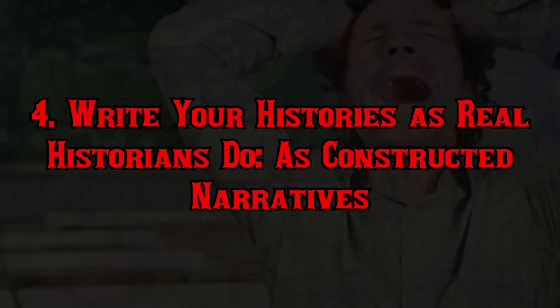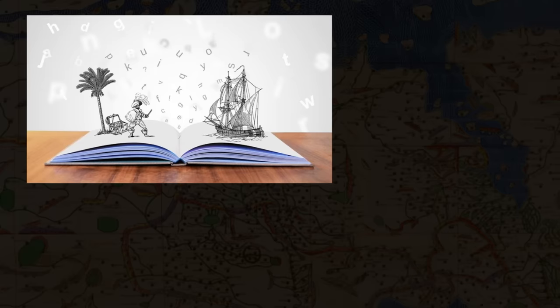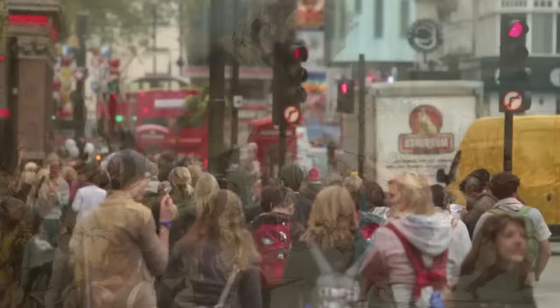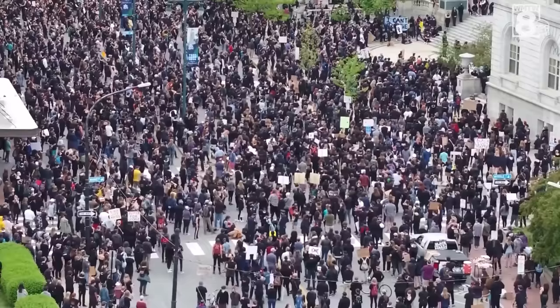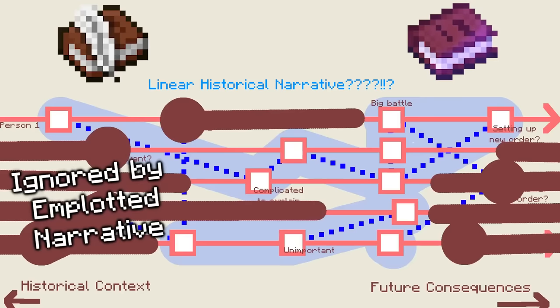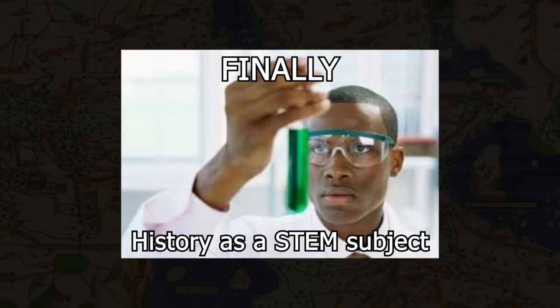Number four: write your histories as real historians do — as constructed narratives. History is told either as a kind of story, an argument, or just as a straight-up data dump. Some academic articles are just awful. For us world builders who want to make engaging worlds, we should tell them as stories. But when you think about how history actually happens — if there's a million people involved, a fully accurate history would tell the story a million separate times. So storytelling historians have to pick and choose which perspectives and details are important and neglect the rest. You're going to need a methodology.